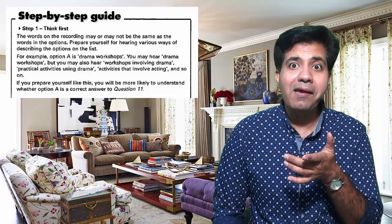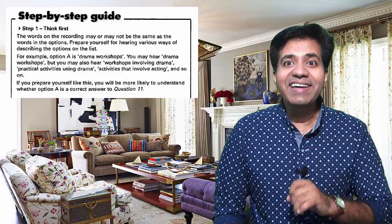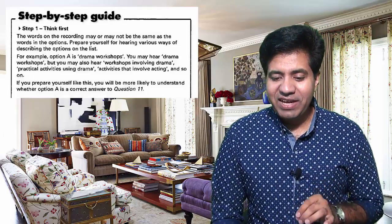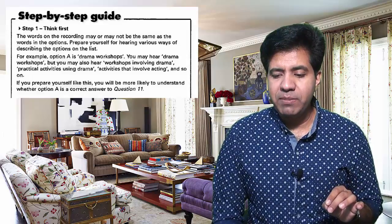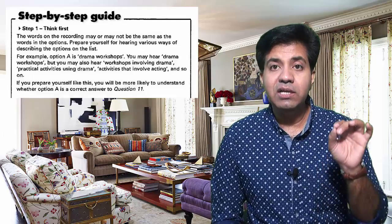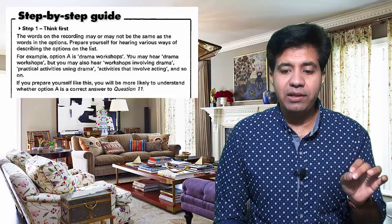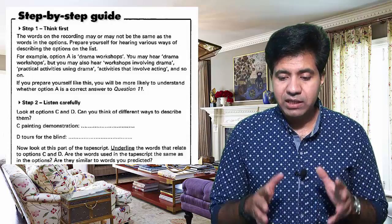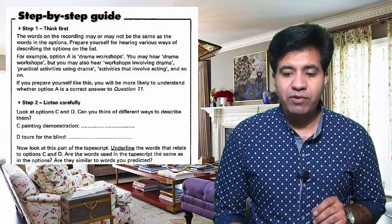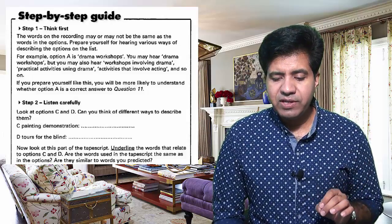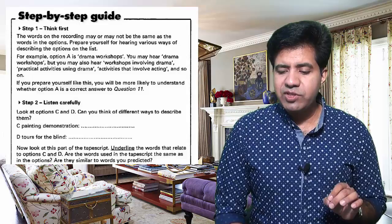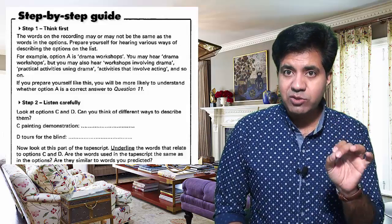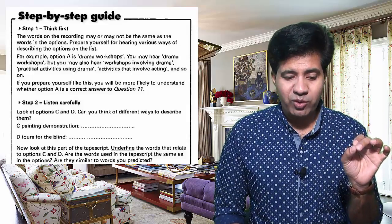If you prepare yourself like this, you'll be more likely to understand whether option A is the correct answer to question 11 or option B. Look at options C and D — can you think of different ways to describe them? Now let's look at the tape script. Underline the words that relate to options C and D. Are the words in the tape script the same as in the options, or similar to what you predicted?